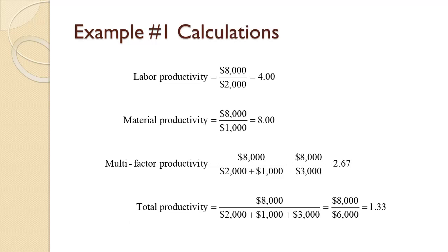Output is $8,000, so this will be used as the numerator for all the fractions. For labor productivity, labor costs are $2,000, so $8,000 divided by $2,000 equals 4.00. Material cost is $1,000, so material productivity is $8,000 divided by $1,000 equals 8.00.